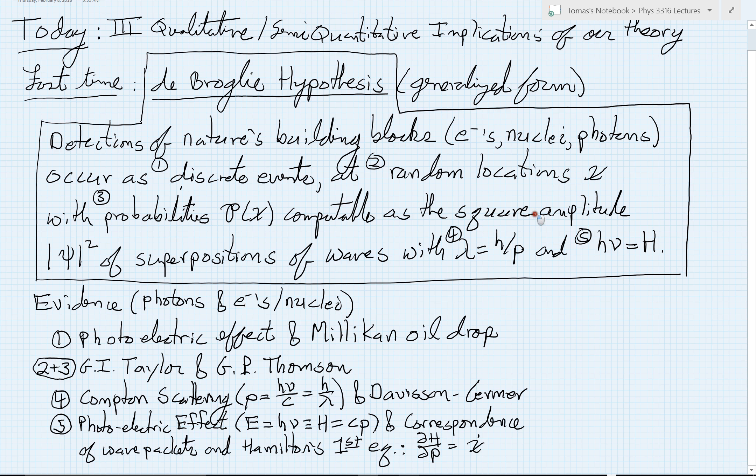And that probability is computable as the square amplitude of superpositions of waves, standard superpositions of waves with square amplitude to give us brightness.